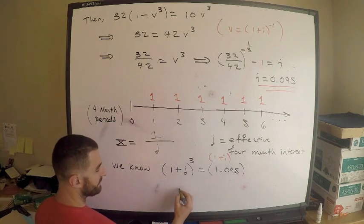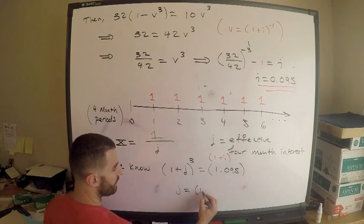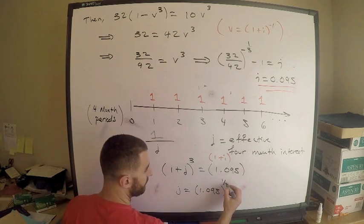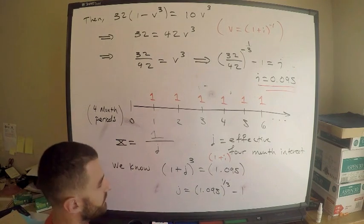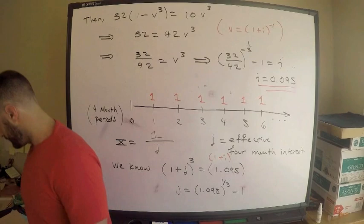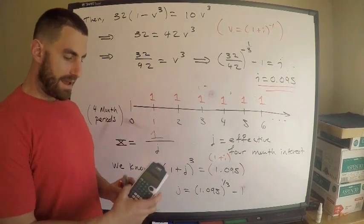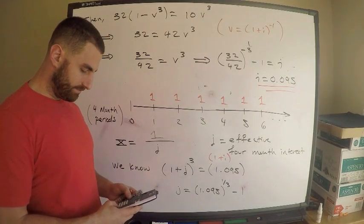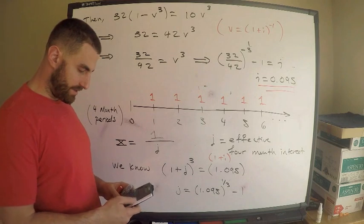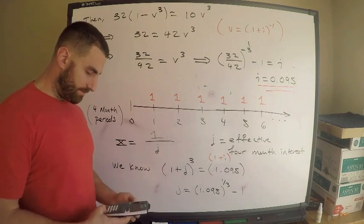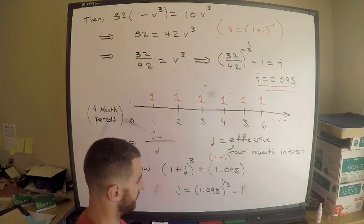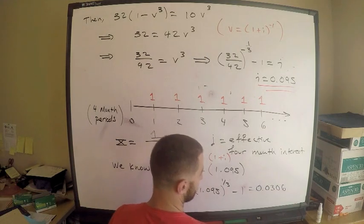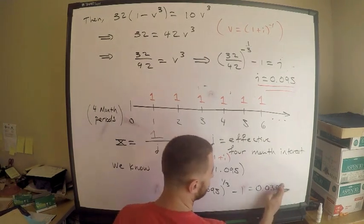So then J equals 1.095 to the one-third minus one, just doing the algebra. That equals - I already have my i saved in here. I'm just going to add one, plus one, and I'm going to raise that to the one divided by three, subtract one, and I get 0.0306. So this is 0.0306. Actually, I should say 07, rounding.